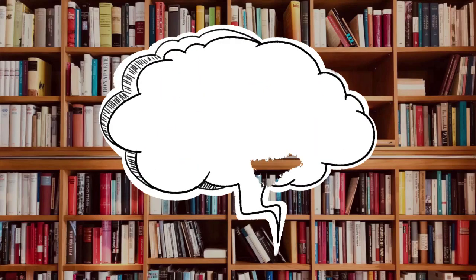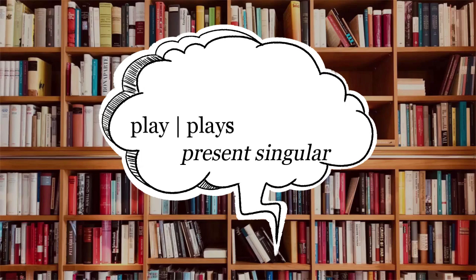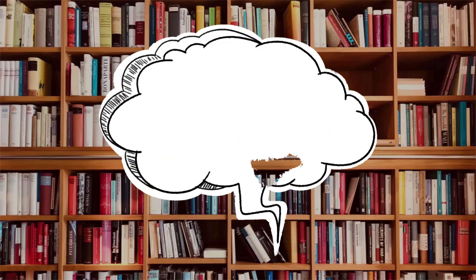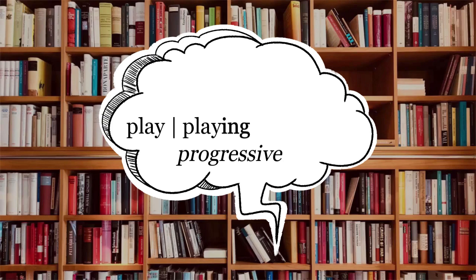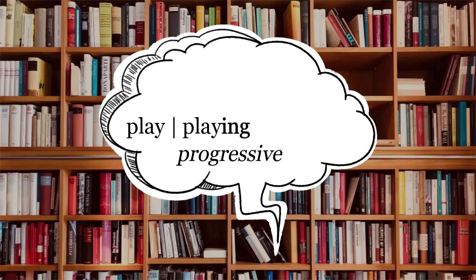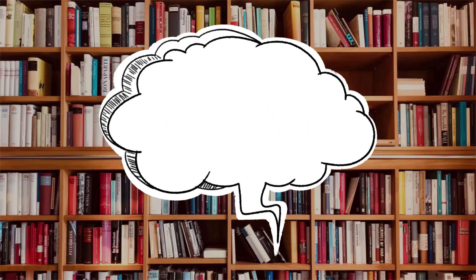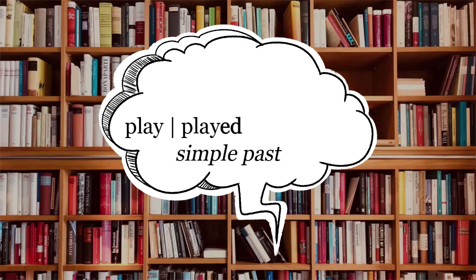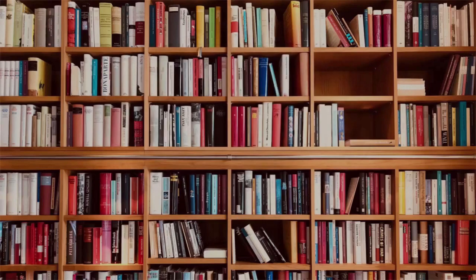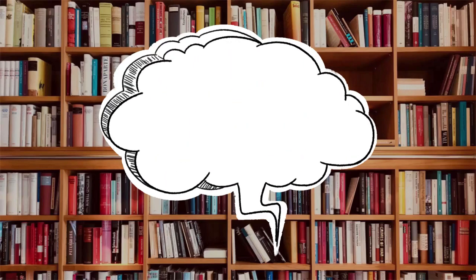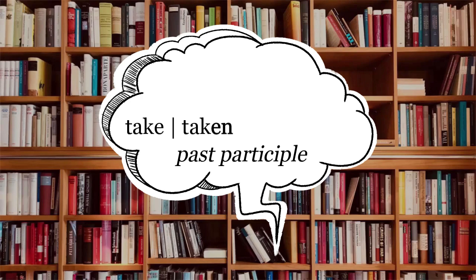The verb play plus 's' is plays — plays is in present singular. Play plus 'ing' is playing — playing is in present progressive. Play plus 'ed' is played — played is in simple past. Take plus 'en' is taken — taken is in past participle.